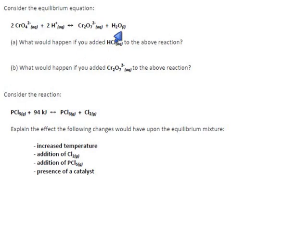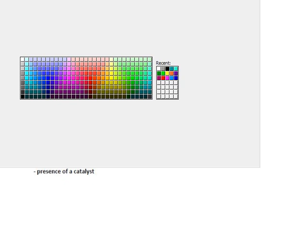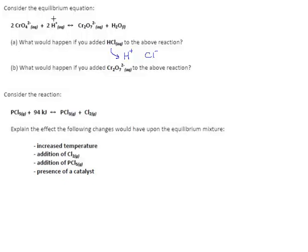There's no mention of HCl in this reaction, but if you put HCl in water, it immediately splits up because it's a top six acid. It dissolves into hydrogen ions and chloride ions. We don't care about the chlorides — this reaction doesn't have any chlorides in it — but it does have hydrogen. So adding HCl is equivalent to adding excess hydrogen to this reaction.